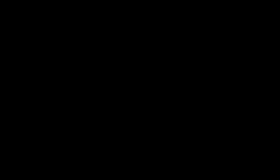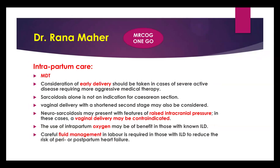Intrapartum care: multidisciplinary team again. Consider early delivery if there is severe active disease requiring aggressive medical therapy. Sarcoidosis alone is not an indication for caesarean section, but it may be offered for obstetric causes or severe neurological affection. Vaginal delivery can be shortened by instrumental delivery. Neurosarcoidosis with increased intracranial pressure contraindicates vaginal delivery.